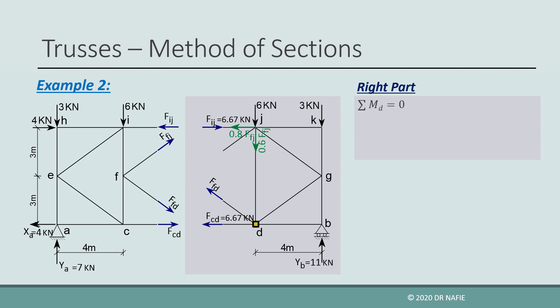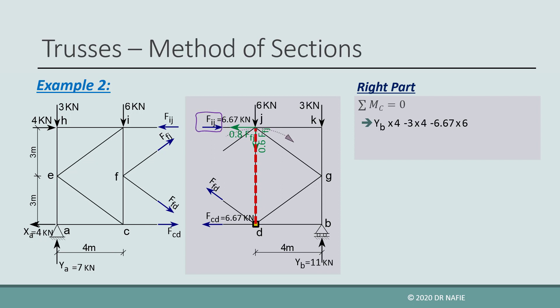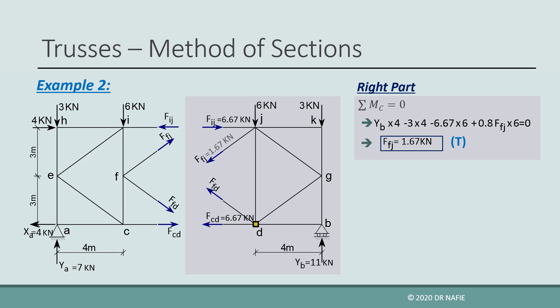Take care that both the X and Y components must be moved together to the same location. By applying the moment equation, we find that the vertical component of FJ, the forces in FD and CD, as well as the vertical 6 kN force, all pass through point D and are not included. The moment equation includes four terms: YV multiplied by 4 m arm counterclockwise positive; 3 kN vertical force multiplied by 4 m arm clockwise negative; the evaluated force in IJ multiplied by 6 m arm clockwise negative; and the horizontal component of FJ multiplied by 6 m arm counterclockwise positive. Solving gives positive 1.67 kN for the force in FJ, so it is tension.